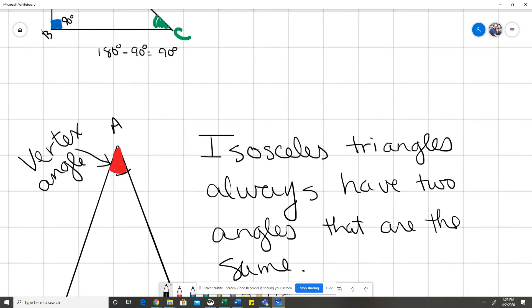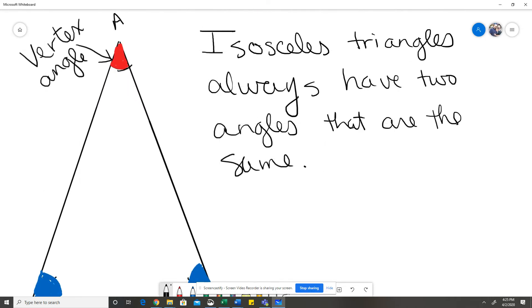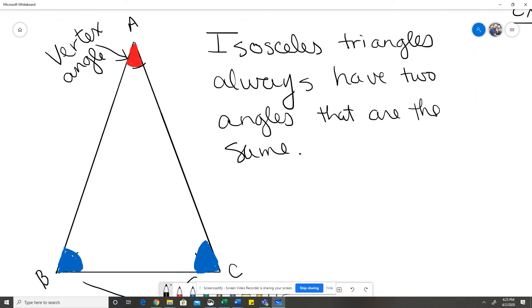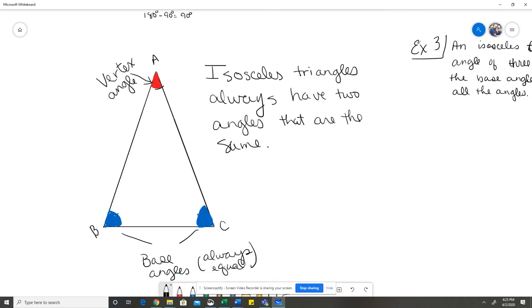The second special triangle that we want to talk about is the isosceles triangle. The isosceles triangle always has two angles that are equal. Those are your base angles. Base angles are always the same. And then the third angle is your vertex angle. So if you know your vertex angle, you could subtract that from 180, divide that by two, and that's your two base angles.